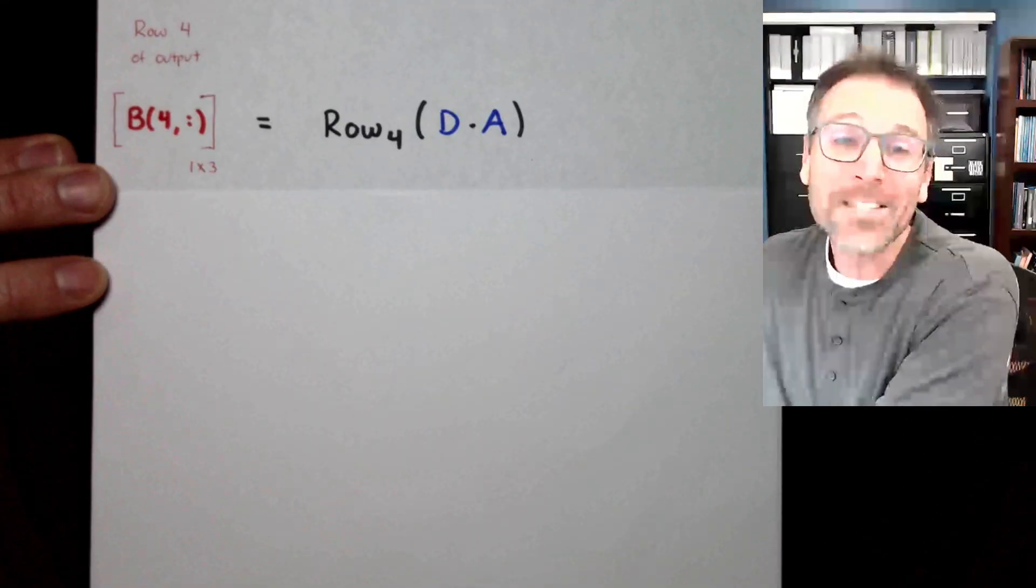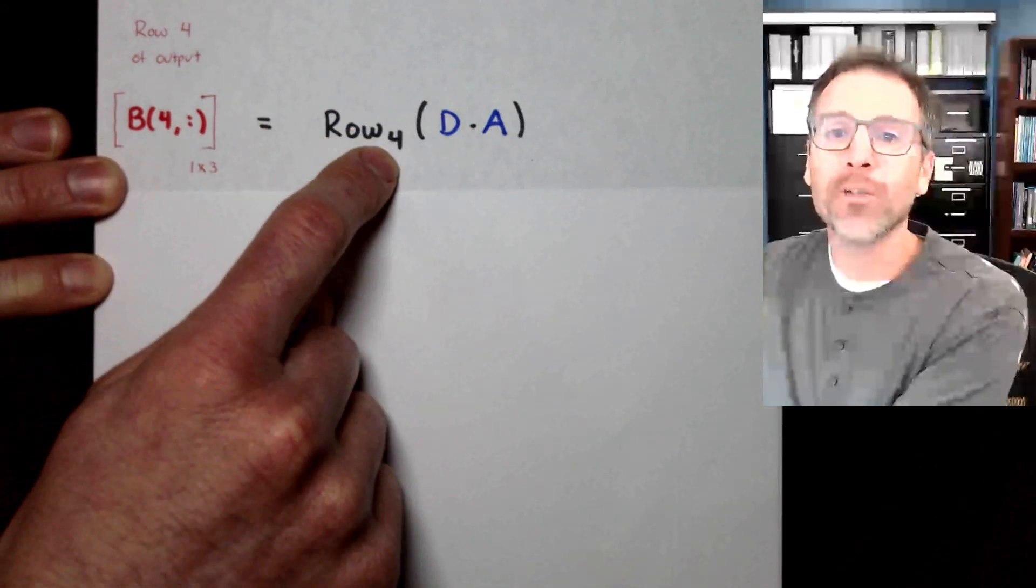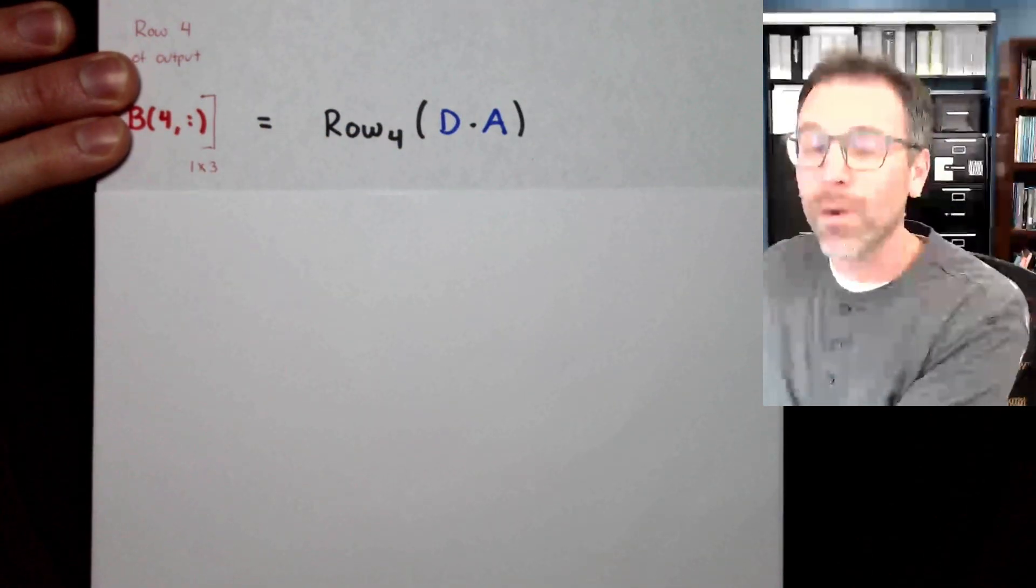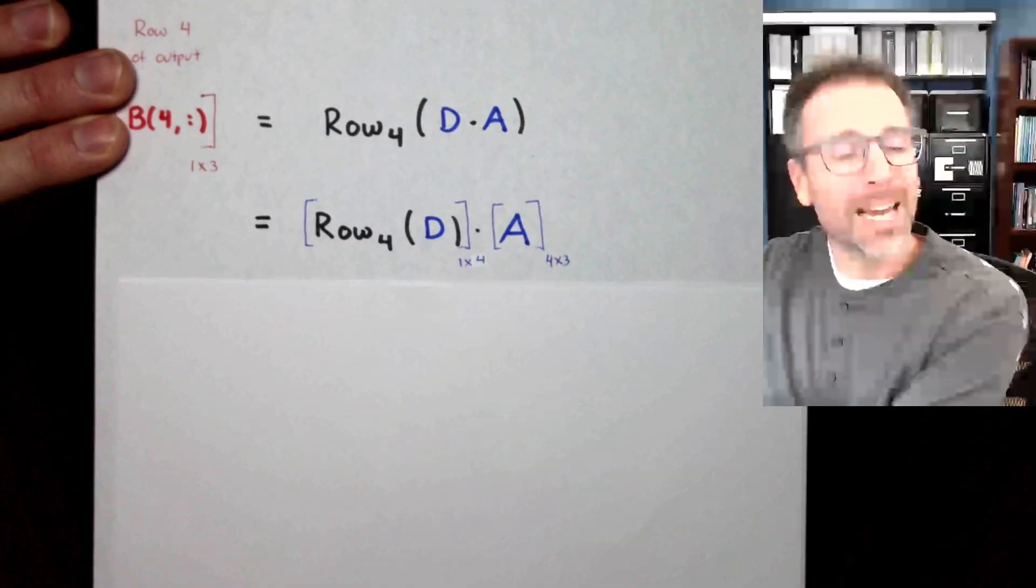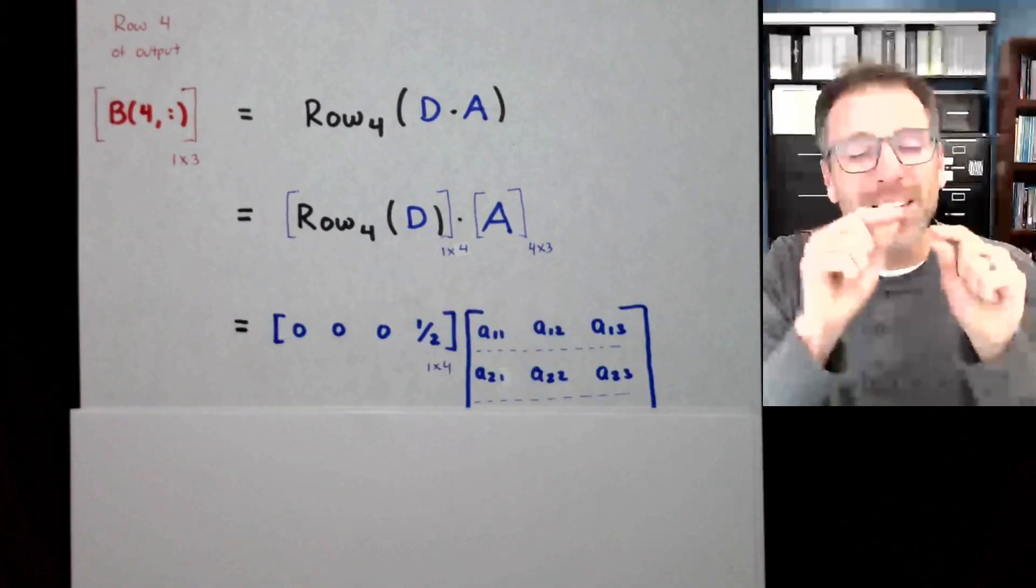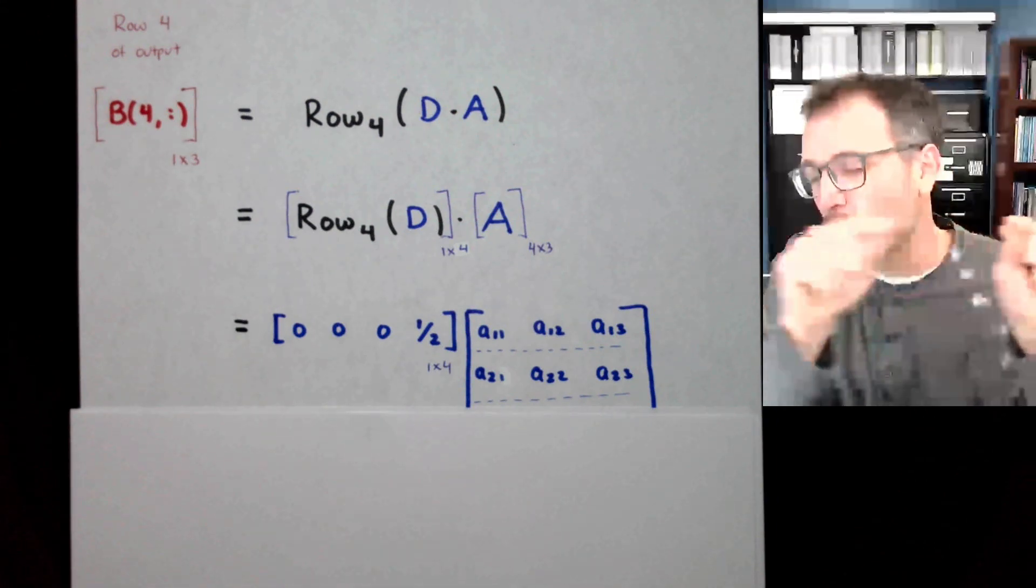For giggles and to finish strong, I'm going to do the fourth row of our output, which is the fourth row of D times A. Remember, so I'm going to do this in my mind, right? The fourth row of D times A is going to be the fourth row of D multiplied by A, which is a linear combination of the rows of A with scalar multiples coming from the row vector on the left hand side.